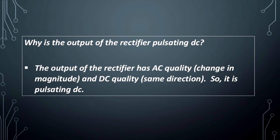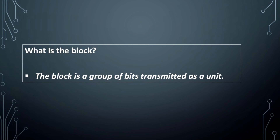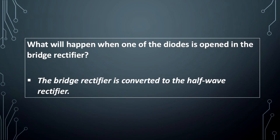Why is the output of the rectifier pulsating DC? The output of the rectifier has AC quality — that is, changing magnitude — and DC quality — same direction — so it is pulsating DC. What is the baud? The baud is the unit of digital transmission signaling speed. What is the block? The block is a group of bits transmitted as a unit.